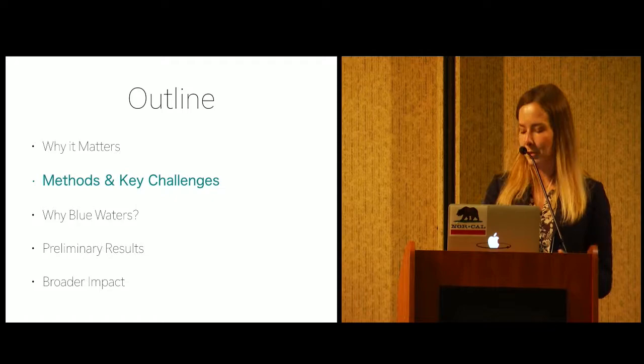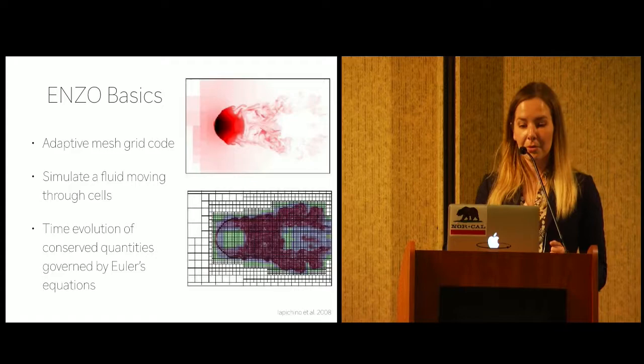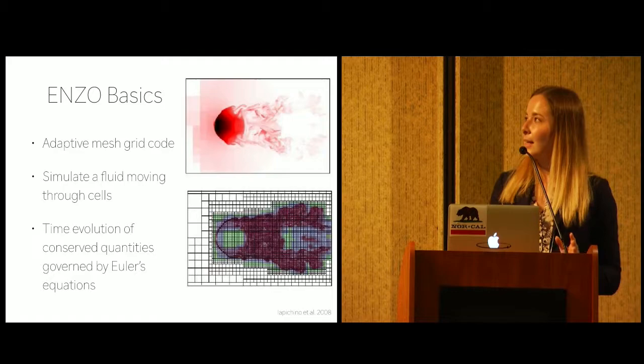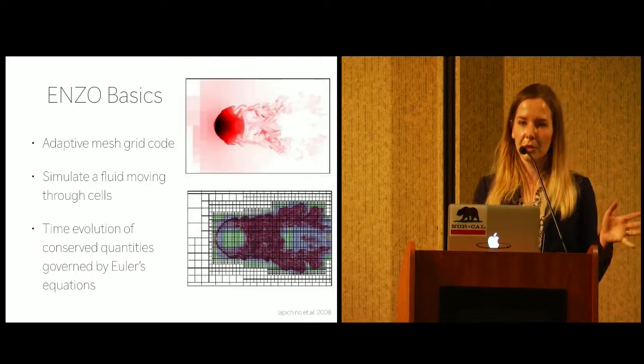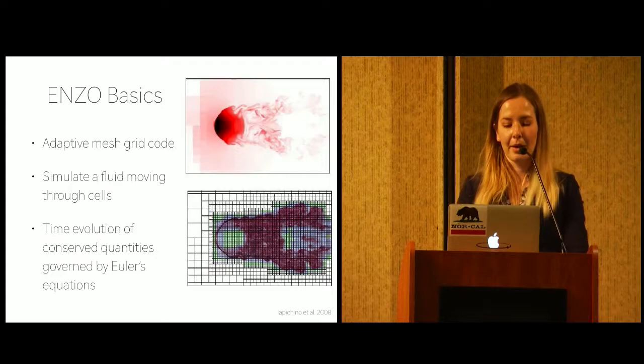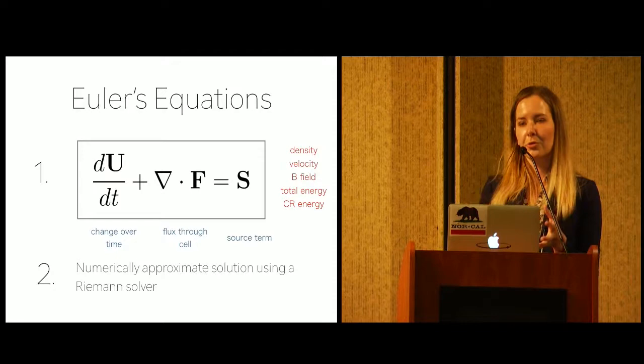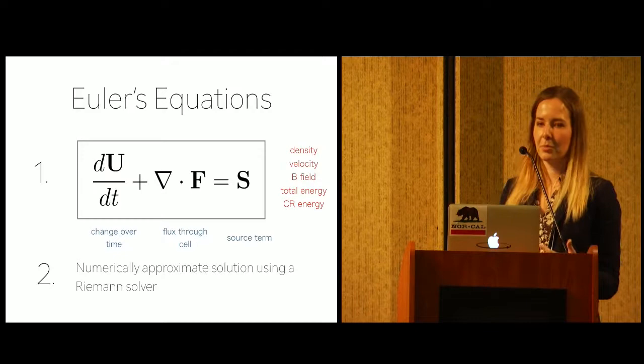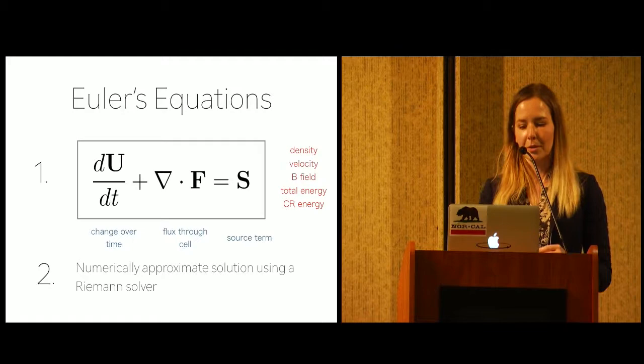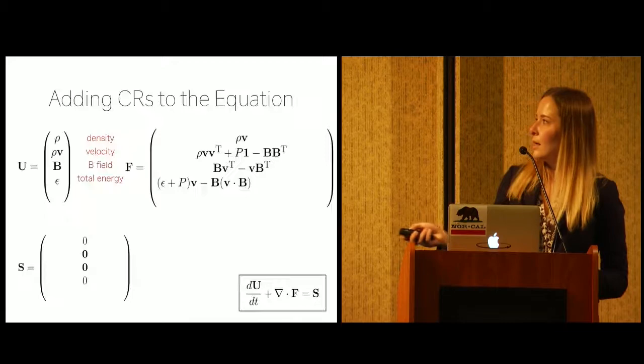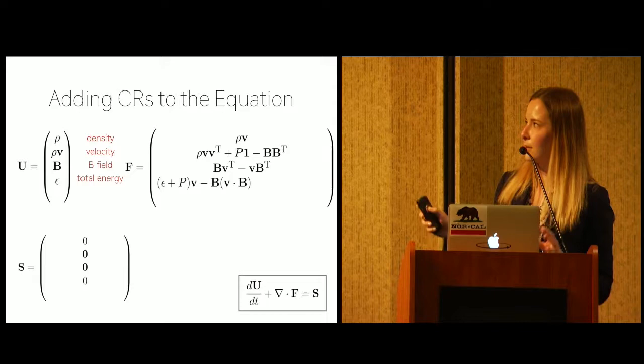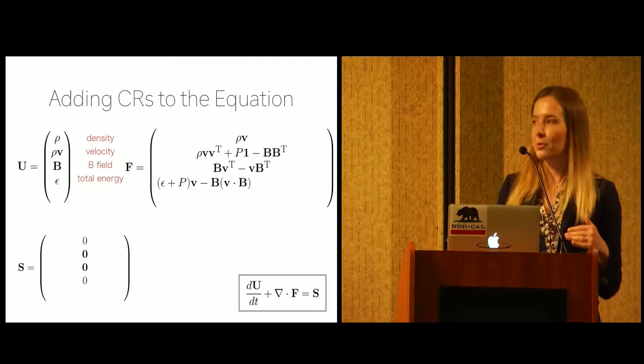So what does it mean to say I added cosmic rays into a simulation code? So I used Enzo for my project, which I know there have been a lot of talks using Enzo, so I'll keep this brief. Enzo is an adaptive mesh grid code, so it simulates a fluid moving through cells. And in order to advance the simulation by a time step, Enzo solves Euler's equations, which are summarized here. It's basically saying the time change of some conserved quantity in a cell should equal the flux of that quantity through the cell interfaces plus any source terms. And for every time step, Enzo numerically approximates the solution to this equation using one of its several Riemann solvers. And so to go into a little bit more detail, the vectors u, f, and s look something like this without cosmic rays, where each row denotes a new conserved quantity that we want to keep track of.